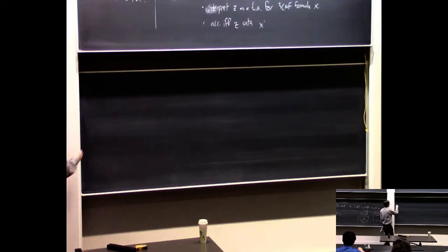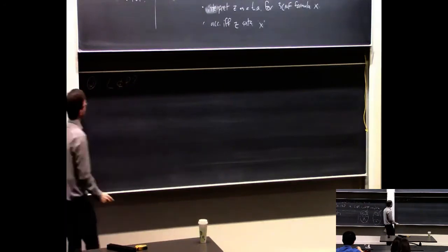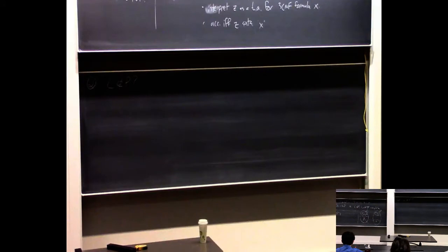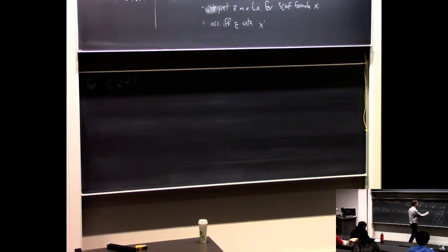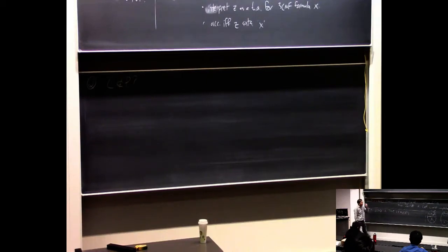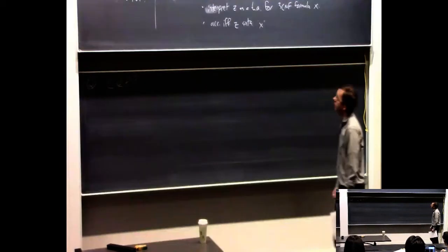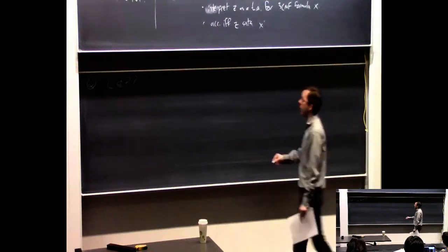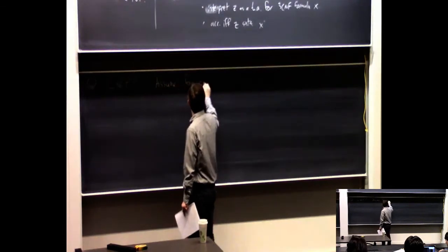Step two: the language is not in polynomial time. Normally we're not very good at proving languages cannot be solved in polynomial time, but luckily we have the exponential time hypothesis to go on. We know that 3SAT cannot be solved not only in polynomial time, but even in any time that's essentially smaller than 2 to the n — anything that's 2 to the little-o of n.